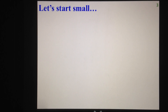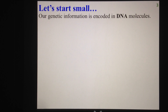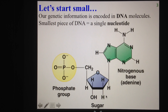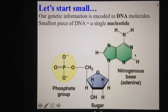Let's start with the smallest things when we're talking about genetic information. Genetic information is encoded by DNA molecules, and the smallest piece of DNA you can have is a single DNA nucleotide. A nucleotide consists of a phosphate group, a deoxyribose sugar, and a nitrogenous base, which basically just means a basic molecule containing nitrogen atoms.